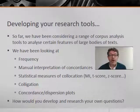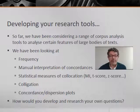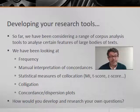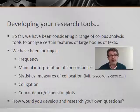So far in this course, we've been looking at different corpus search tools — each explores texts in a different way, though some are related. We've been looking at frequency, manual interpretation of concordances, statistical measures of collocation using mutual information, T-score, and Z-score. We've looked at colligation, and we've looked briefly at concordance or dispersion plots.